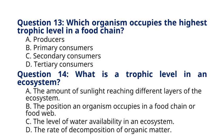Question 14. What is a trophic level in an ecosystem? A. The amount of sunlight reaching different layers of the ecosystem. B. The position an organism occupies in a food chain or food web. C. The level of water availability in an ecosystem. D. The rate of decomposition of organic matter. The correct answer to question 14 is option B. Explanation: A trophic level indicates an organism's position in a food chain or food web based on its feeding relationships.